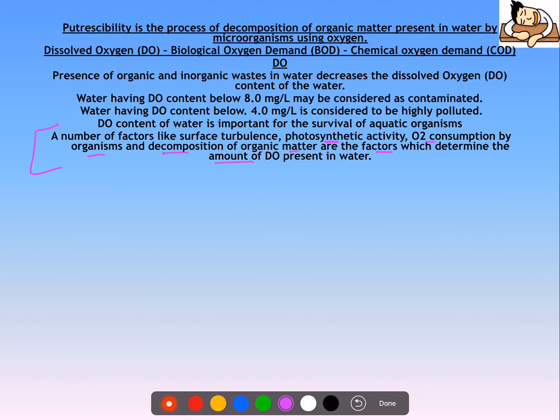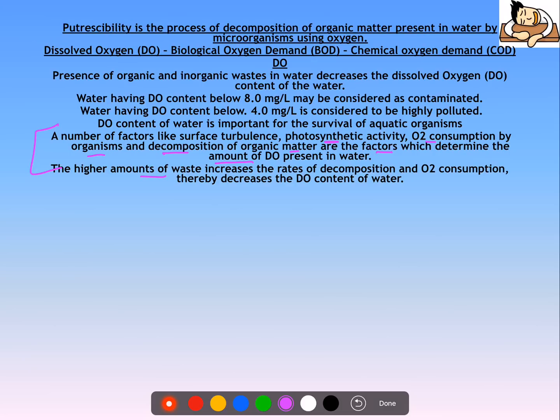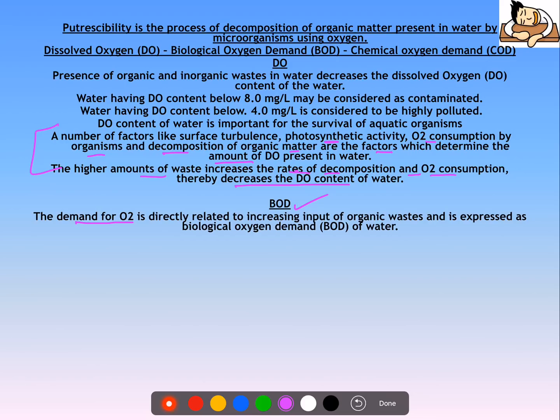Higher amounts of waste increase the rate of decomposition and oxygen consumption, thereby decreasing the DO content of water. The next concept is BOD — Biological Oxygen Demand. The demand for oxygen is directly related to increasing input of organic waste. The more organic waste in water, the more oxygen is required to break it down, and the higher the BOD of the water body.